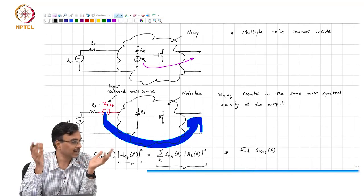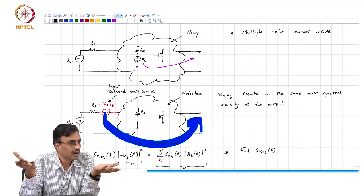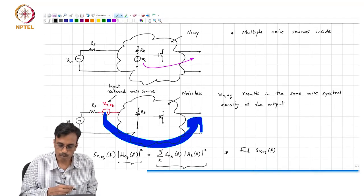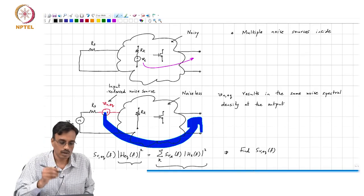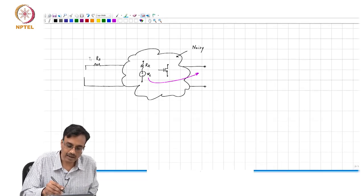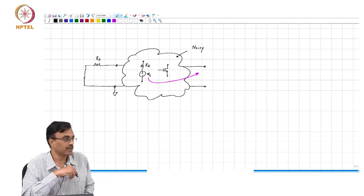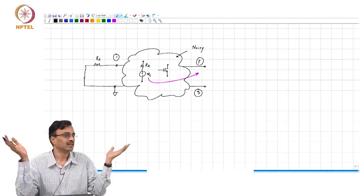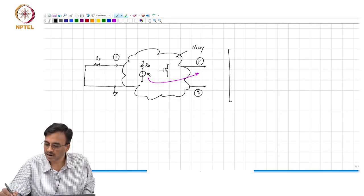Now let us get started. Our job is: A) to find the transfer functions from each of those internal sources to the output, and also from V_n_equivalent to the output. Given a general network, we can only come up with broad guidelines, since without knowing the network it is not possible to compute the transfer function explicitly. I will use KCL/KVL nodal analysis. Let us say I am interested in finding the transfer function from V_k to V_op. I choose this node as my reference node — ground is node 0, then node 1, node p, and node q — and write the nodal equations.